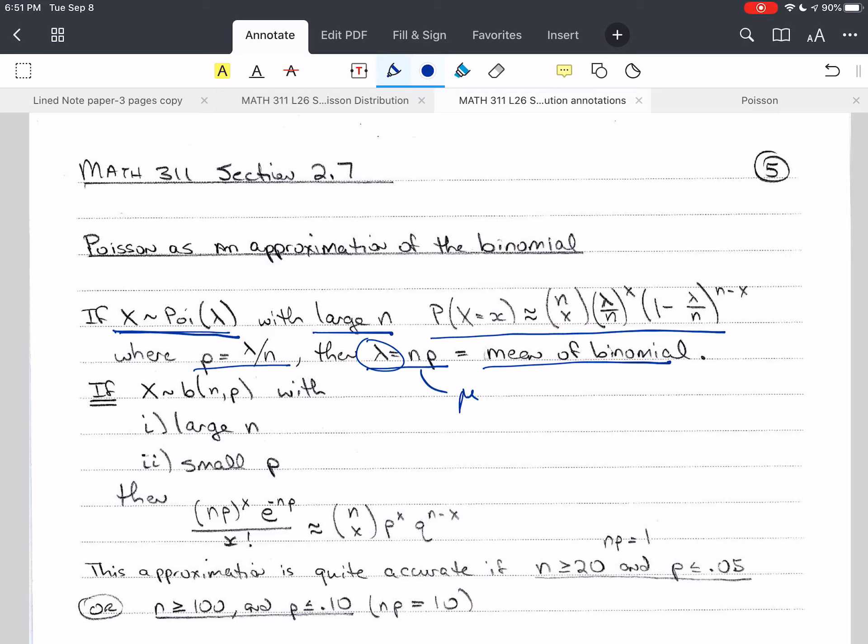So if X is binomially distributed with N and P as the parameters, then if we have a large N and a small P, the approximation is very good. And so what we can do is we can plug in for lambda, we'll plug in N P, and so that's approximately equal to the binomial distribution.